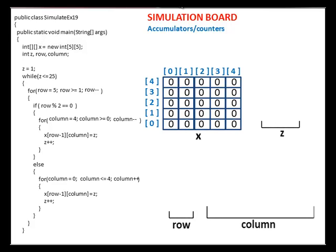Integer variable z, row, and column are declared in the program. Assign 1 as initial value of z.